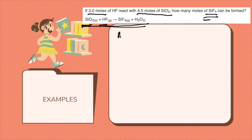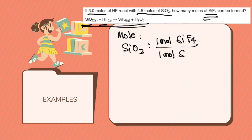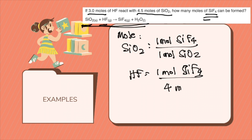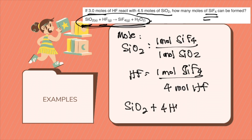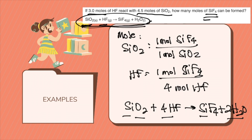The second step is to solve for the mole ratio. For SiO2: 1 mole of SiF4 is to 1 mole of SiO2. For HF: 1 mole of SiF4 is to 4 moles of HF. This is based on the balanced equation: SiO2 + 4HF → SiF4 + 2H2O. Hydrogen, oxygen, silicon, and fluorine are all balanced.